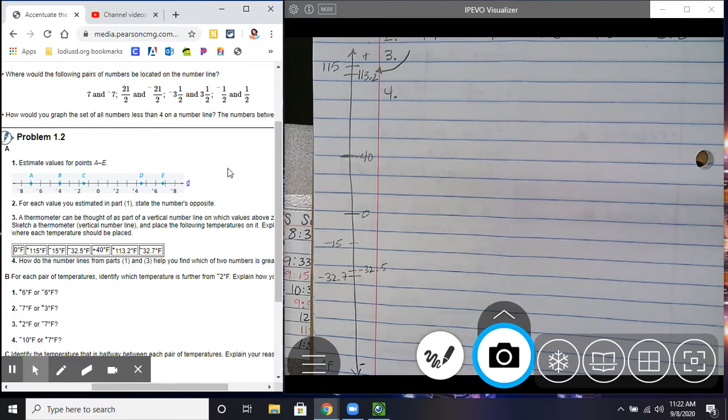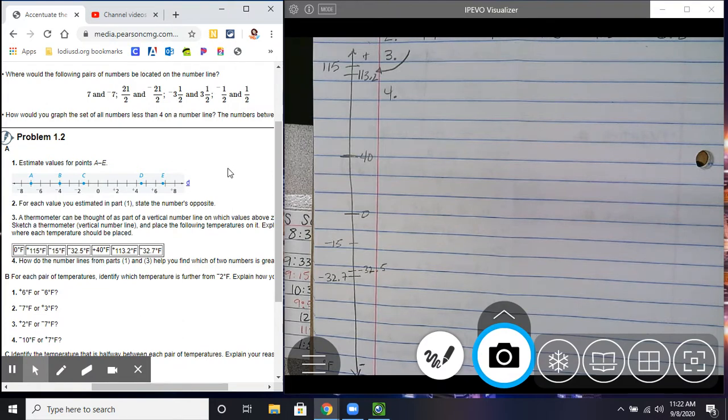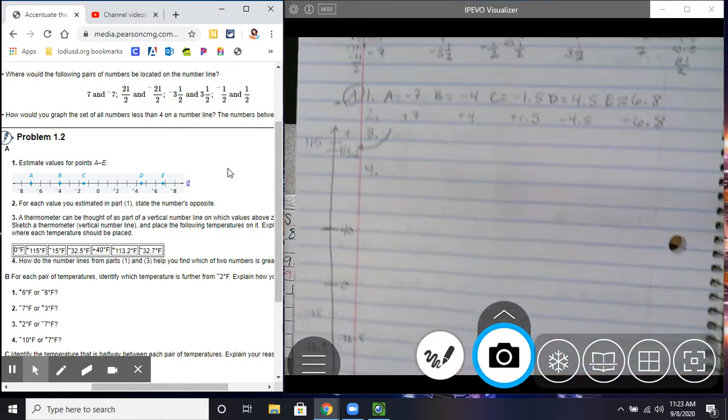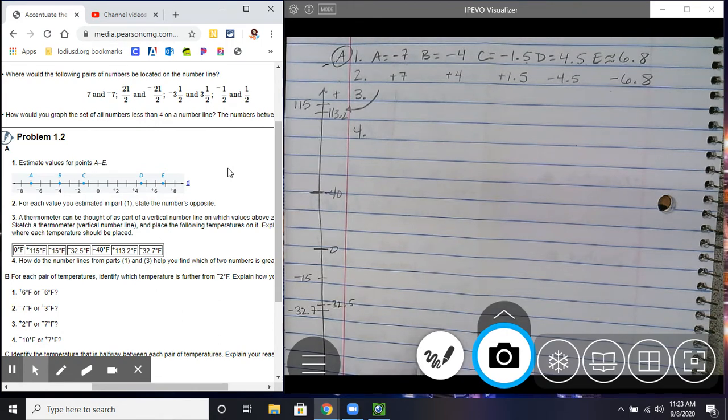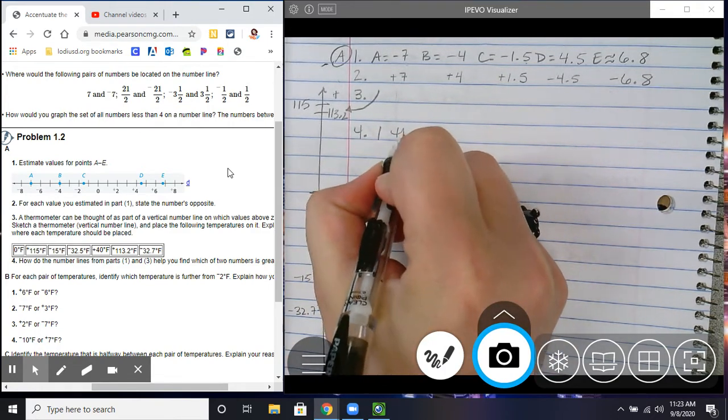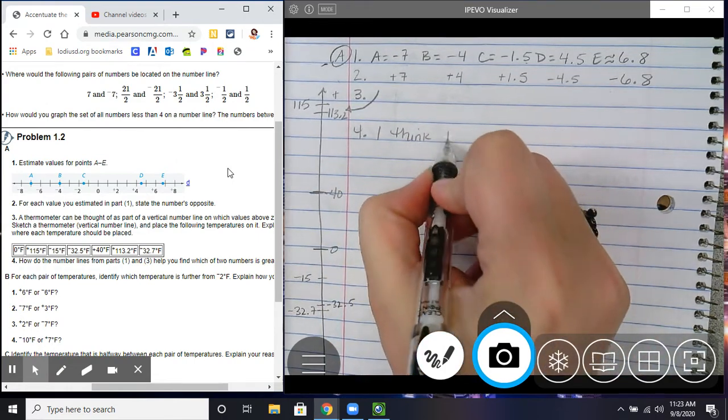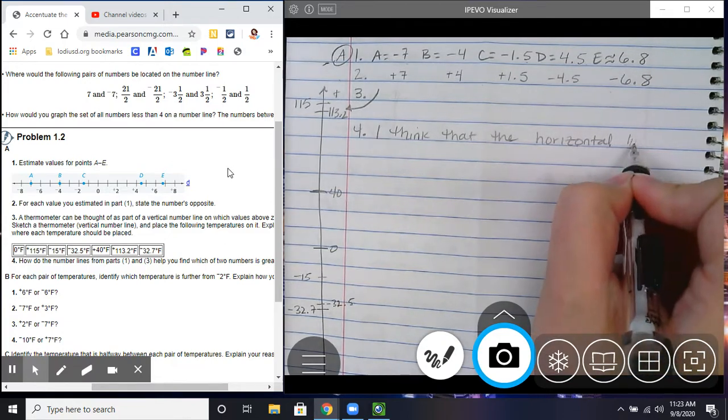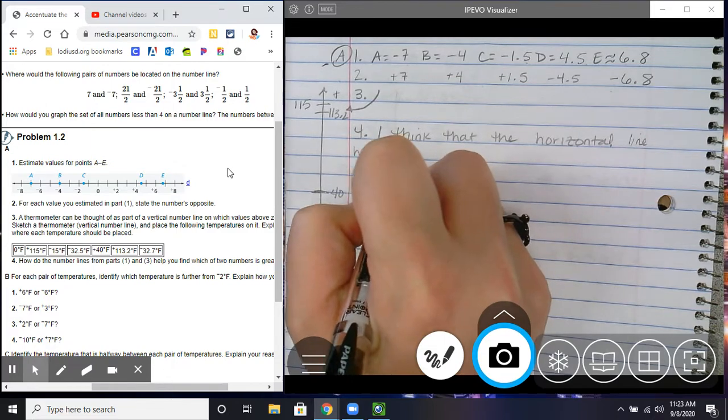How do the number lines from part one and three help you find which of two number is greater? What a strangely worded question. Well, we have two different number lines, right? We have the vertical one, and then the horizontal one. So, I think this kind of is like your opinion on, because it says, how do they help you find which of the numbers are greater? So, I think you're just going to have to put something like, I think that the horizontal line helps, blah, blah, blah. That's going to be your opinion.